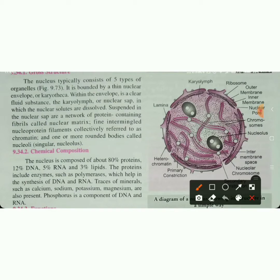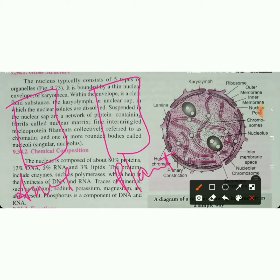When we talk about the nucleus, we have two types of cells. In animal cells, the nucleus is present in the center. But in plant cells, there is a big vacuole, so the nucleus is pushed to the side.